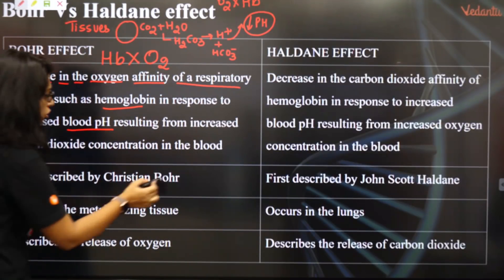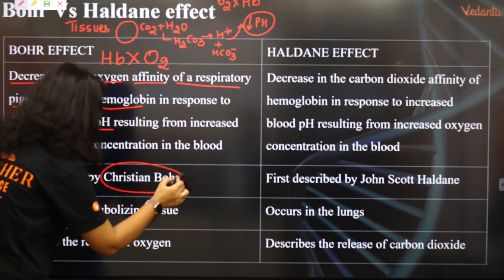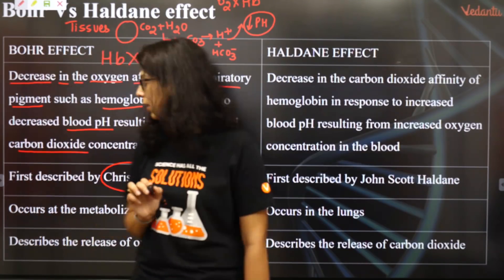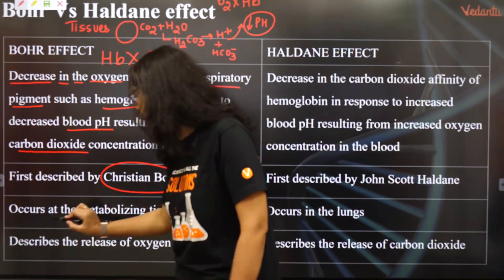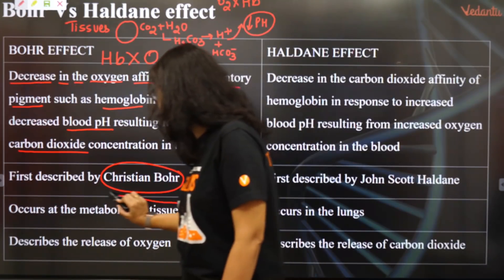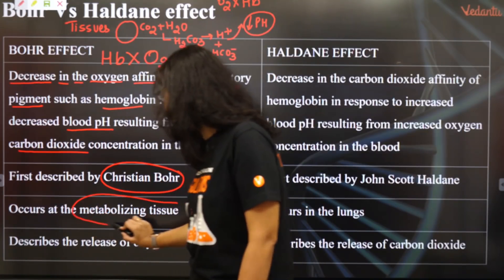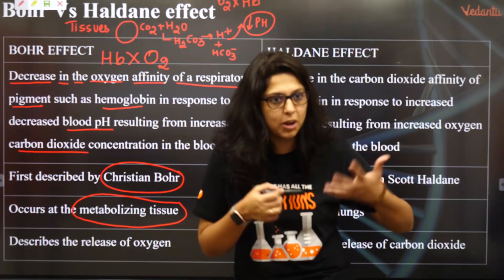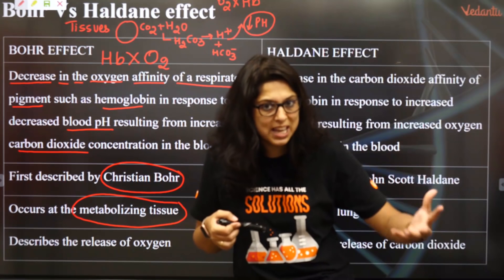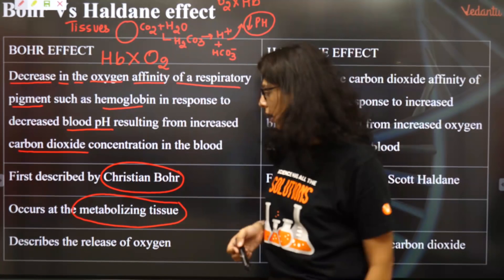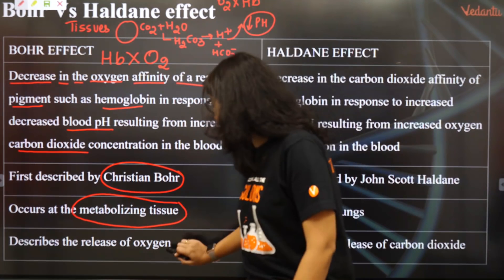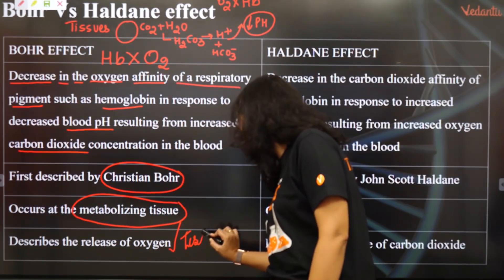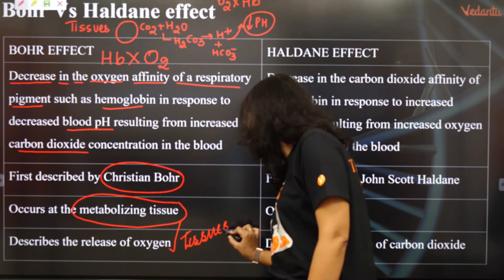The Bohr effect was first described by Christian Bohr. It happens whenever carbon dioxide concentration increases in the blood. It occurs at the metabolizing tissues — that means in those parts of the body where metabolism is happening and O2 is being used. It describes the release of oxygen in the tissues, where hemoglobin releases its oxygen.